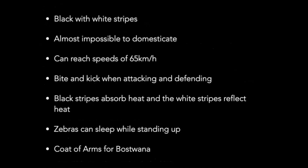The black and white stripes help zebras regulate temperature — the black stripes absorb heat and the white stripes reflect it. Unlike other members of the equus genus, zebras are almost impossible to domesticate; horses and donkeys have been domesticated, but zebras are extremely feral. Zebras have been recorded reaching speeds of about 65 kilometers per hour, which helps them escape predators. Zebras bite and kick when attacking or defending themselves.